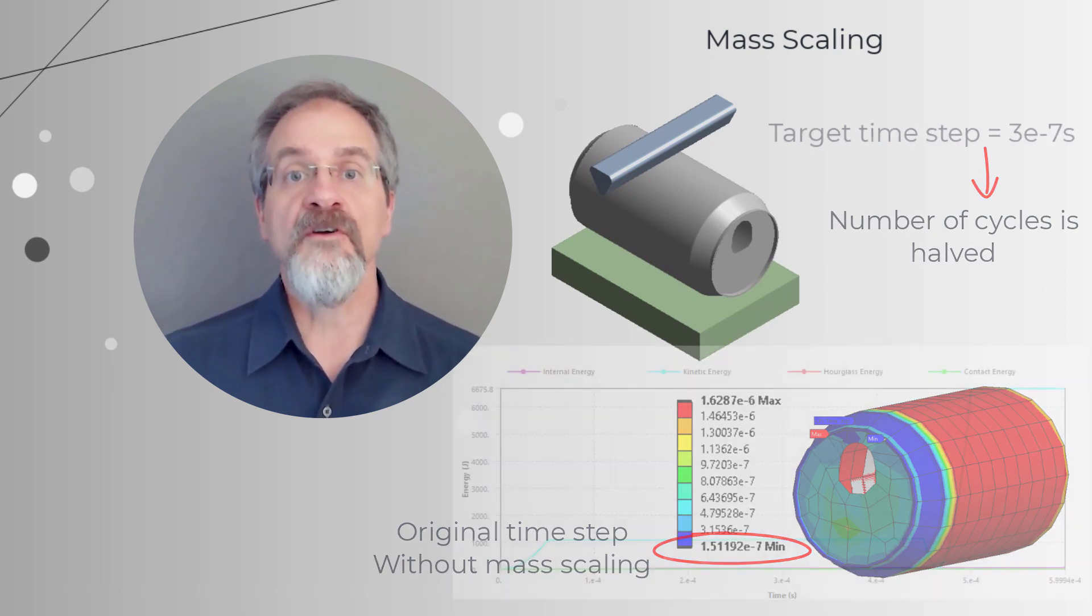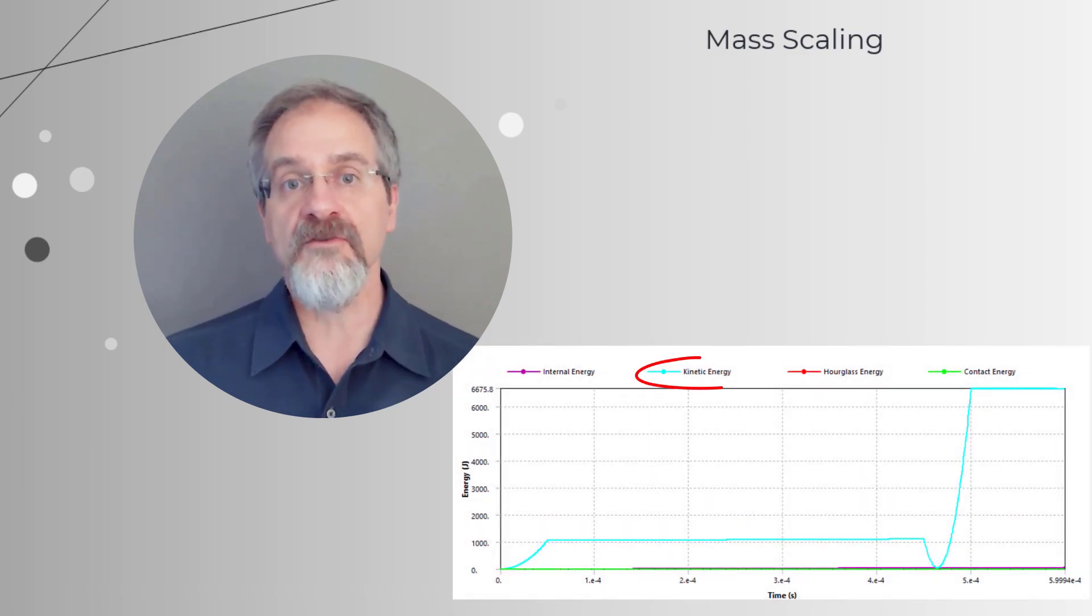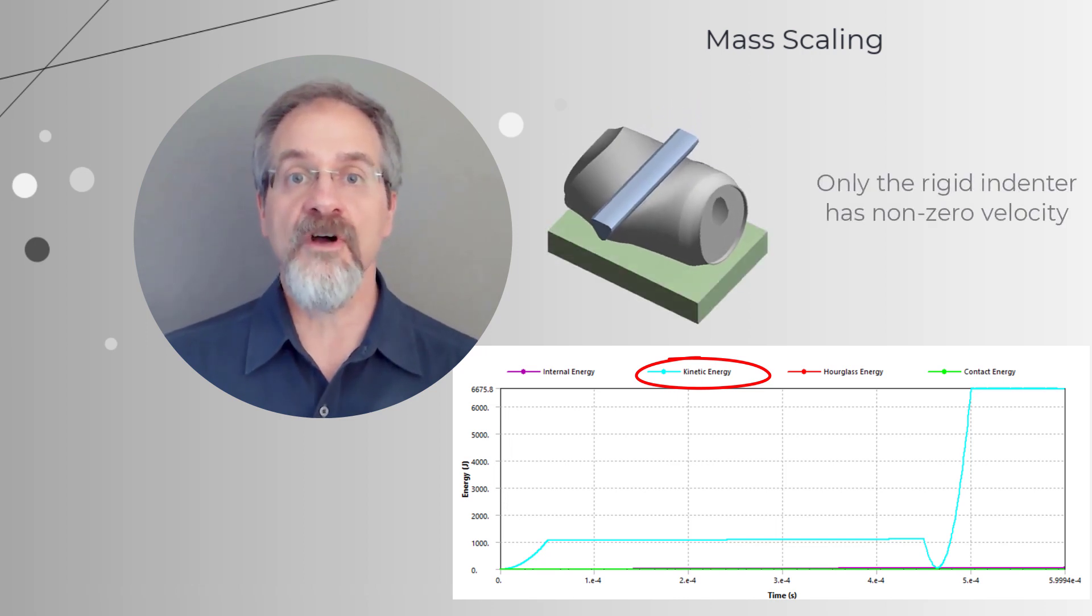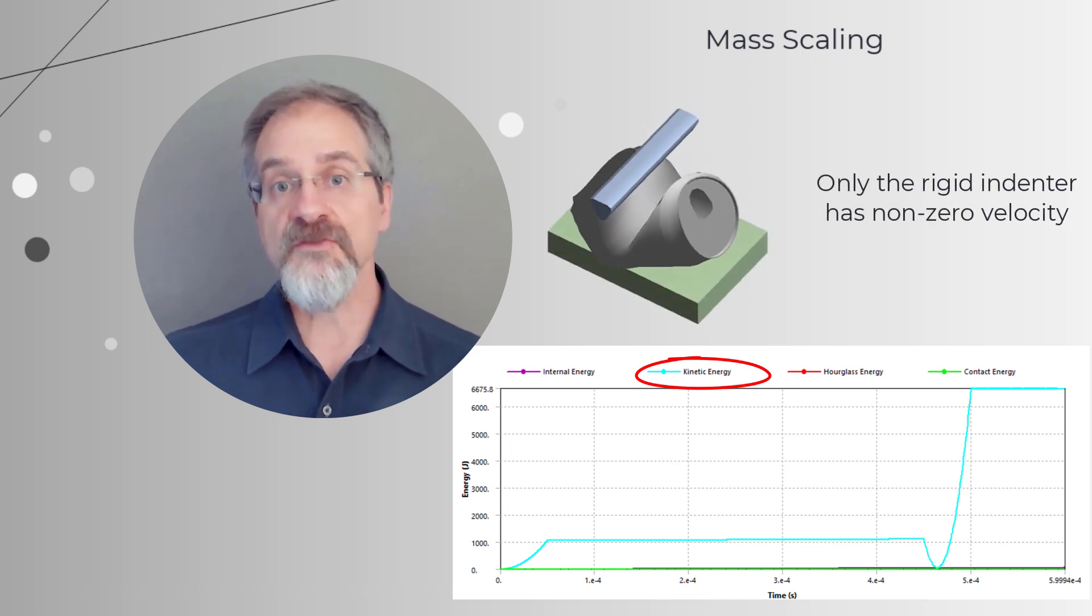When we solve this problem, first we check the initial kinetic energy in the energy summary. In this case, however, only the rigid indenter has an initial non-zero velocity, and since rigid bodies do not affect the critical time step, it doesn't undergo any mass scaling.